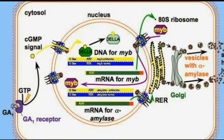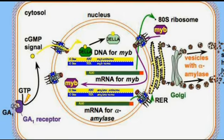MYB gene activation produces mRNA for MYB. The MYB mRNA moves to the ribosome, where the MYB protein is synthesized. This newly synthesized GA-MYB protein enters the nucleus and binds the promoters of alpha-amylase and genes encoding other hydrolytic enzymes like alpha-amylase, which is essential for the hydrolysis of the aleurone layer. Transcription of these genes is activated.